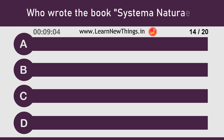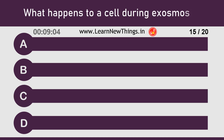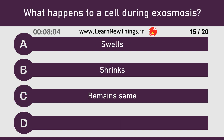Who wrote the book Systema Natura? Carl Linnaeus. What happens to a cell during exosmosis?